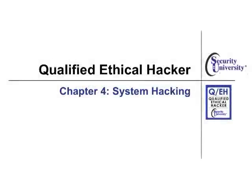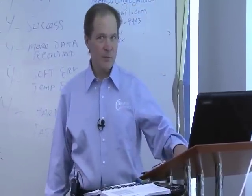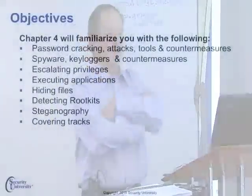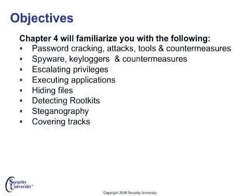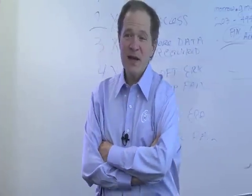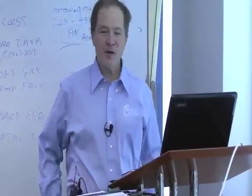Chapter four is on system hacking, and in many cases in this chapter you'll see that a lot of the stuff is malicious. It's about spreading Trojans, doing denial of service attacks, and a number of other things, but it's still ethical hacking. So we'll look at cracking passwords, attacking sites, using spyware, installing keyloggers, escalating privileges, hiding files, executing applications, and detecting rootkits. Some of the stuff we'll do from the point of view of the attacker, other stuff to learn how attackers work, and other stuff to figure out how we can create countermeasures against these things.